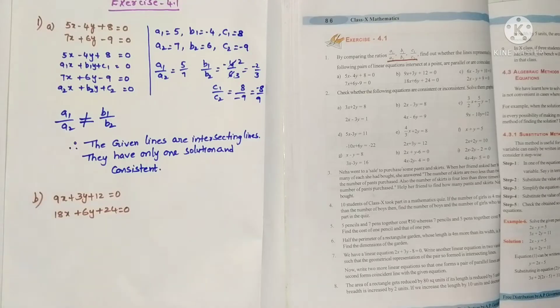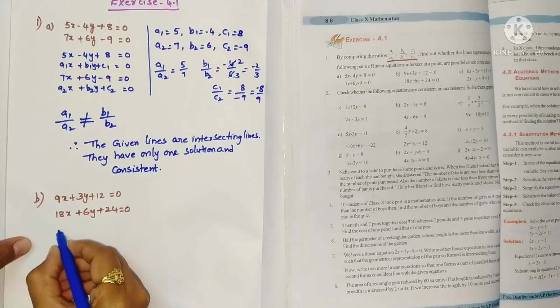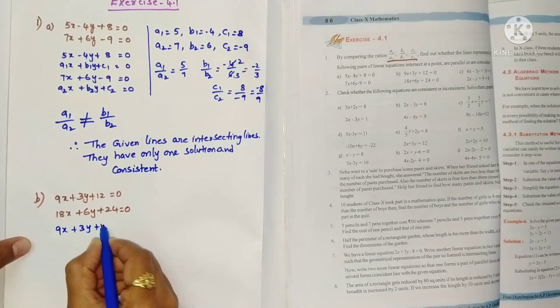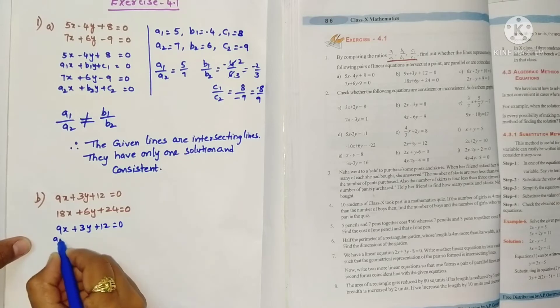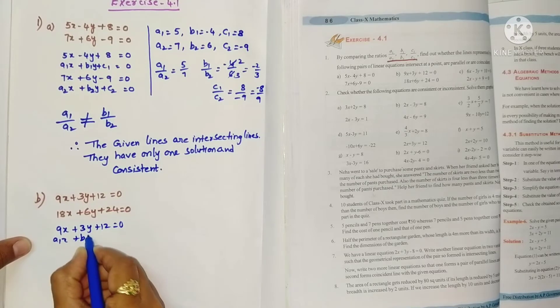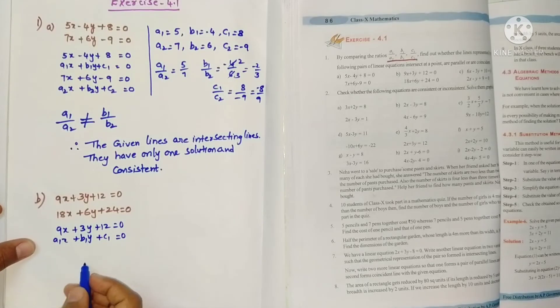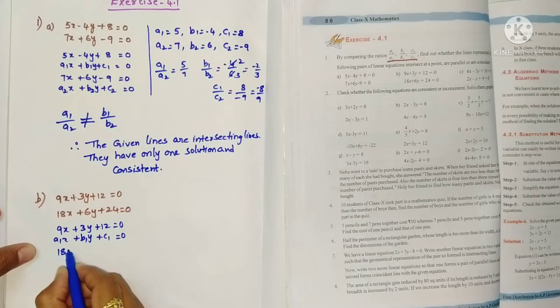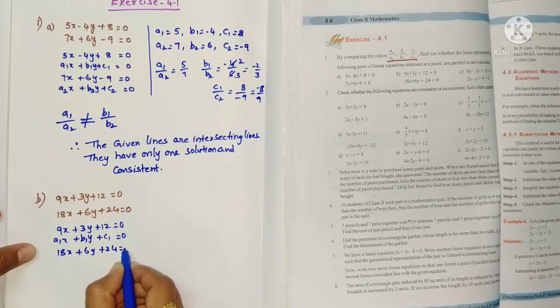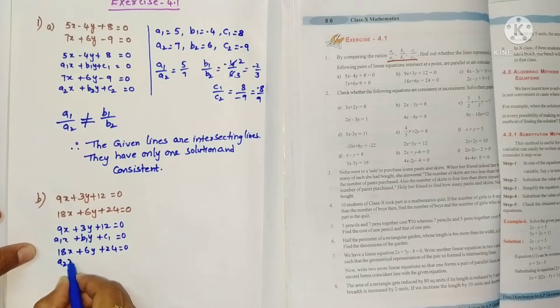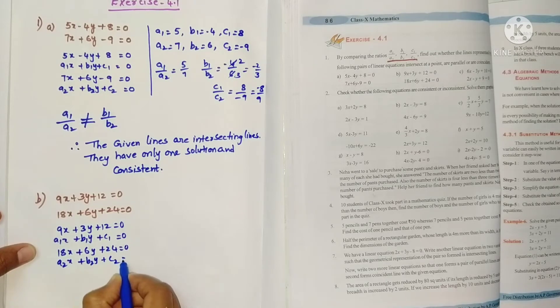So this is second problem. Just compare the first equation with a1x plus b1y plus c1 equals 0, and second equation 18x plus 6y plus 24 equals 0, a2x plus b2y plus c2 equals 0.